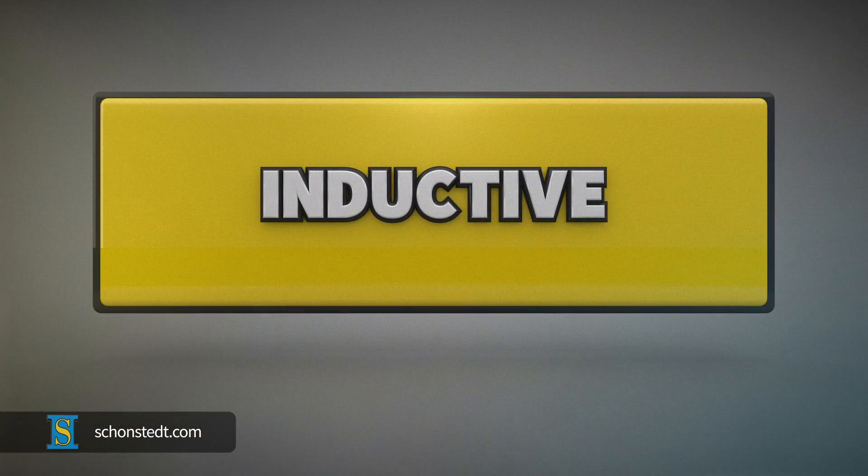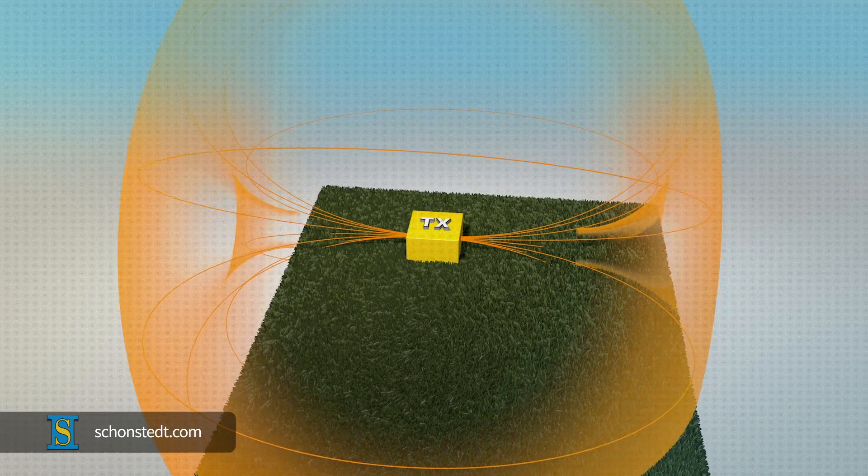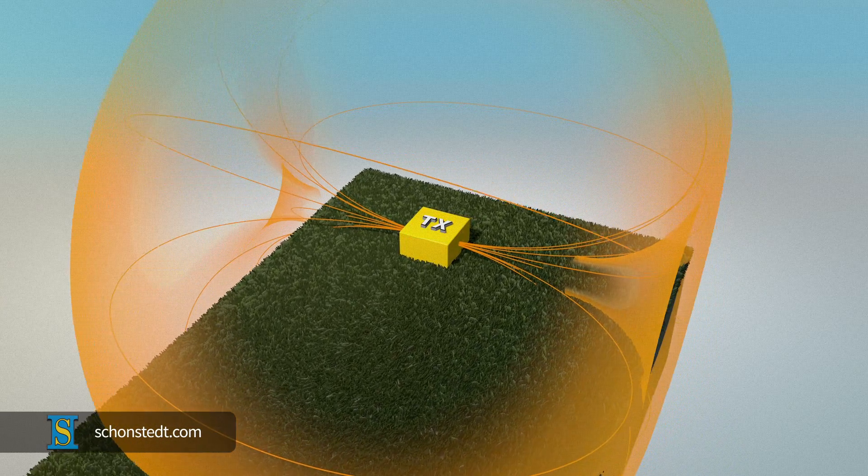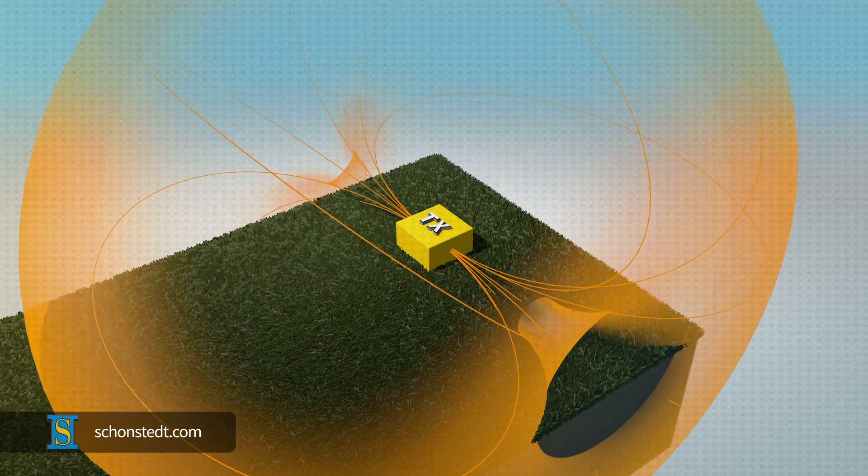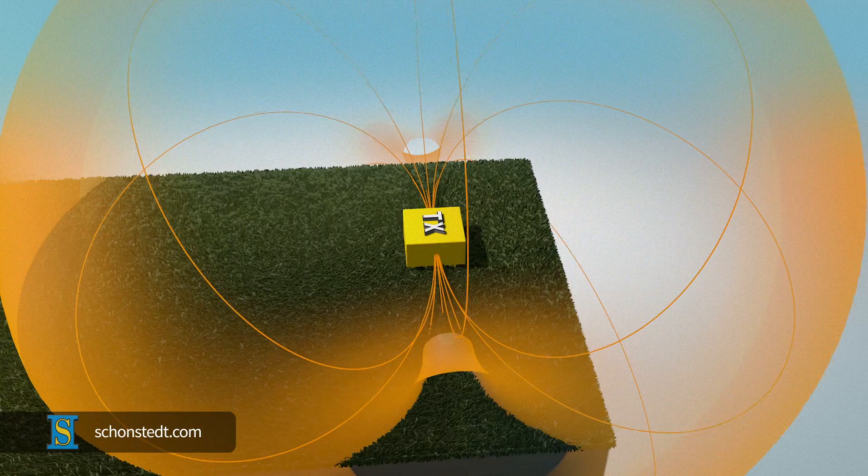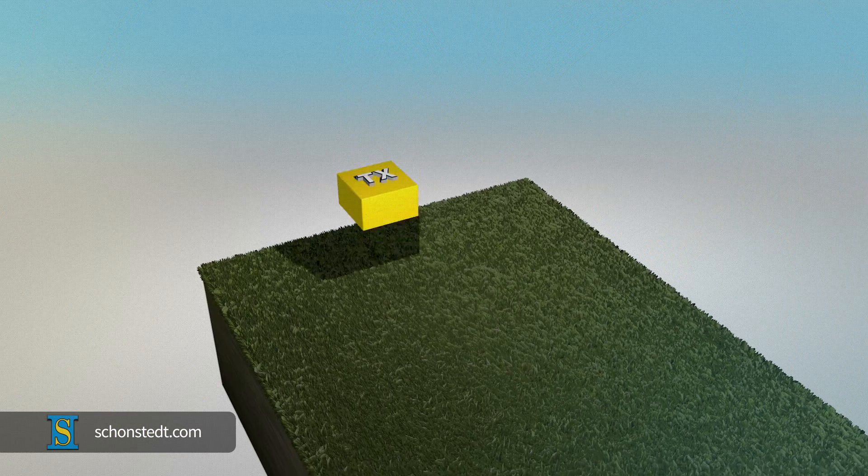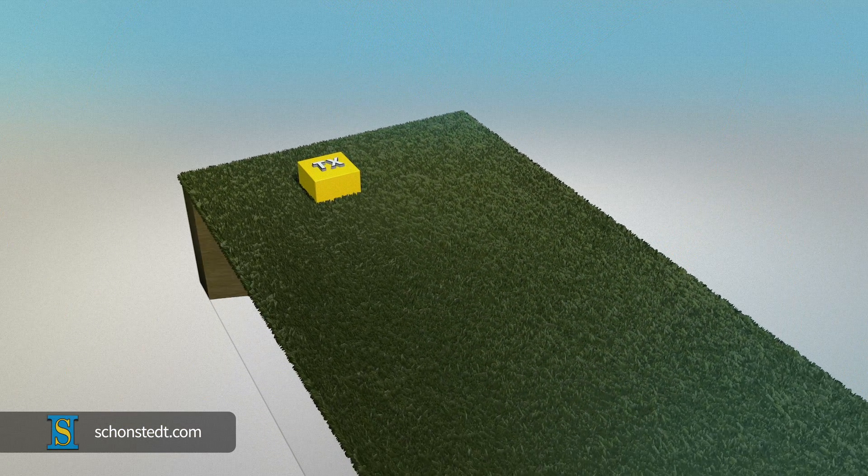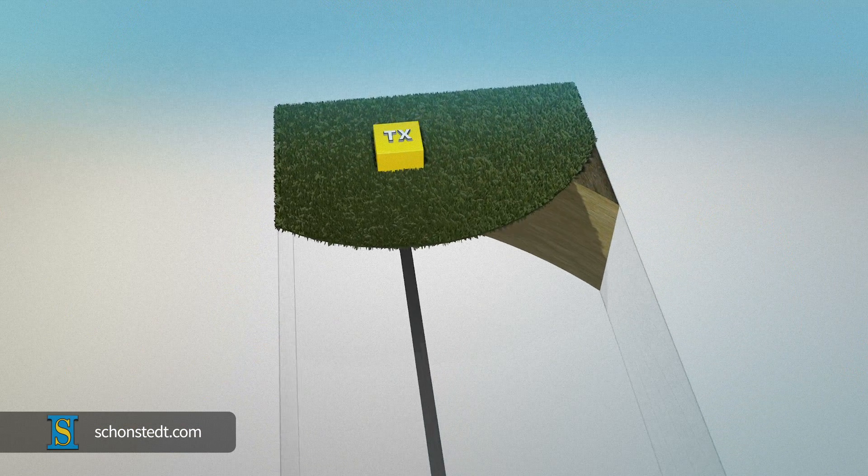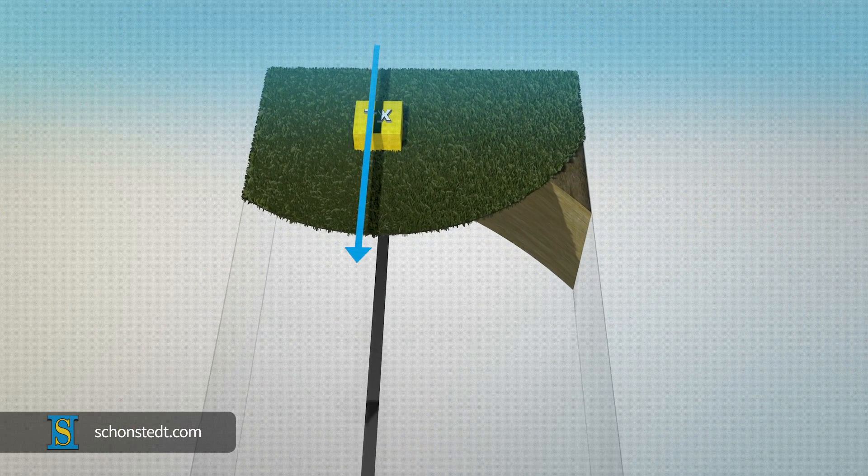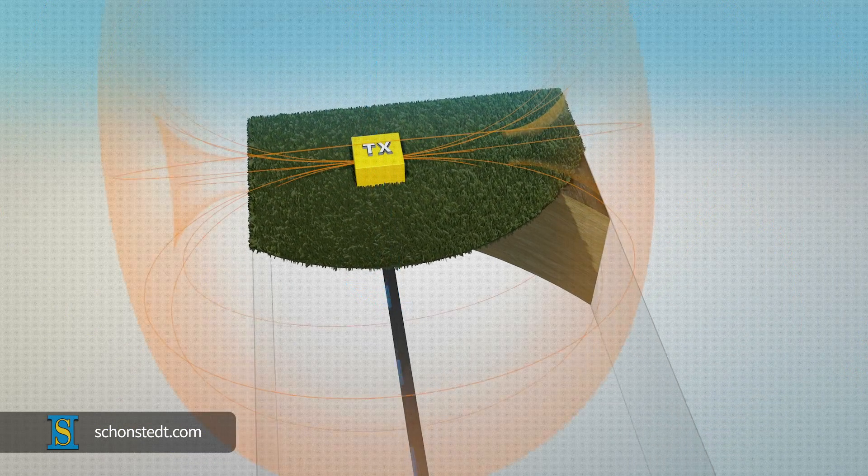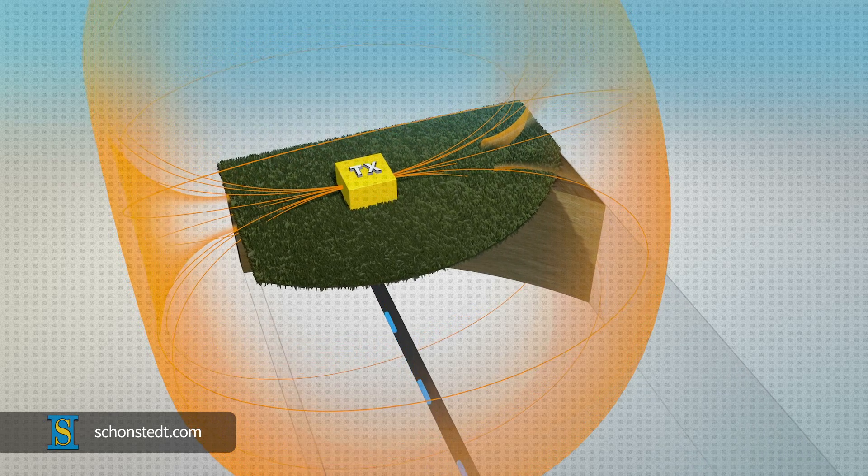For the inductive method, an antenna that is either built into the transmitter or attached to it as an accessory generates a signal that induces a current on the target pipe or cable. Place the transmitter, or the antenna attached to the transmitter, on the ground, directly over the pipe or cable. The arrow on the label should be parallel to the anticipated trace line direction.